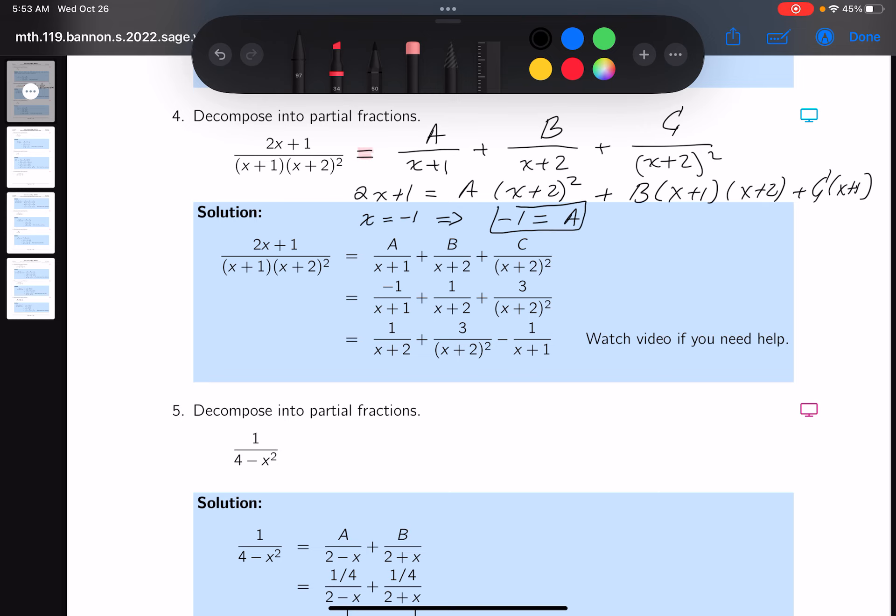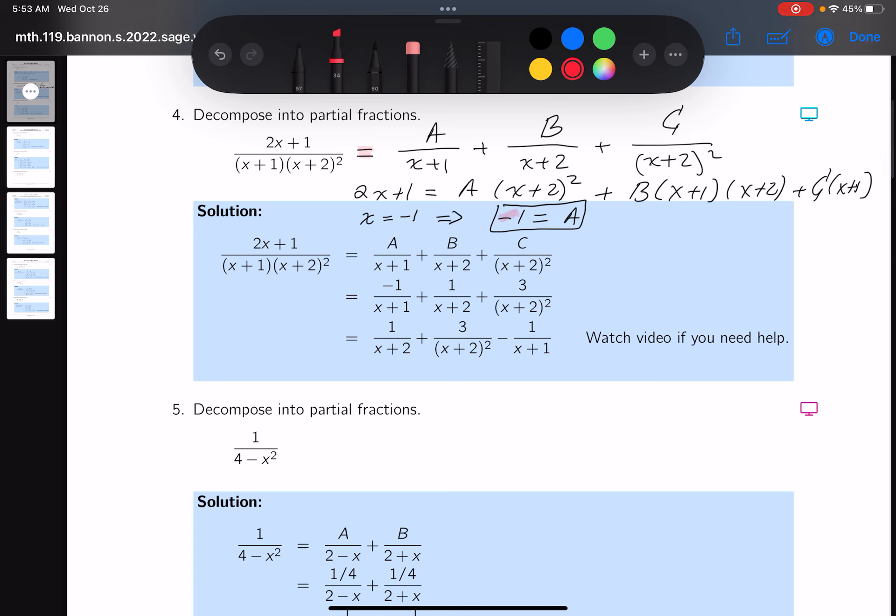Let me do another one. I would probably set x to be minus 2. What would you get there? Well if you did that, you get something pretty simple too. You would get minus 4 plus 1, which is minus 3, equals—the first term involving A would disappear, the second term involving B would disappear, but then you would get C and that would be minus 2 plus 1, which is minus 1, so minus C. So that means C is equal to 3. I'll put a box in that.